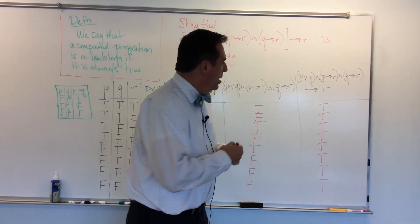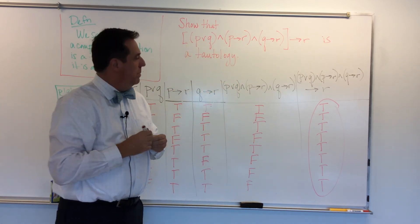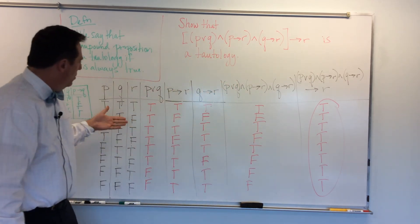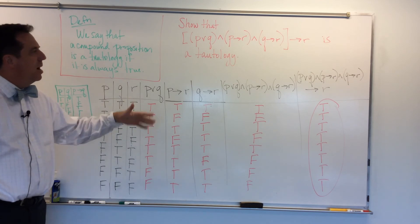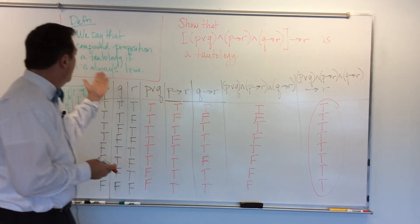True, and sure enough, we've proven that this big ugly mess is a tautology because no matter what my truth values are for P, Q, and R, I always get back true, and that's the definition of tautology.